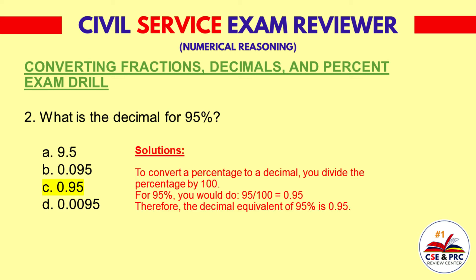Solution: To convert a percentage to a decimal, divide the percentage by 100. For 95%, you would do 95 divided by 100, which equals 0.95. Therefore, the decimal equivalent of 95% is 0.95.